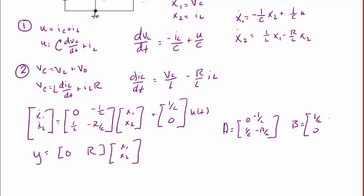Our B matrix is [1 over C; 0], our C matrix is [0, R], and D is equal to 0.